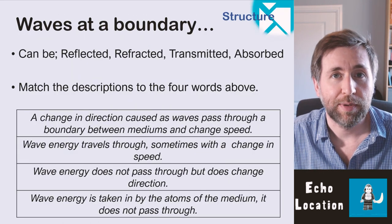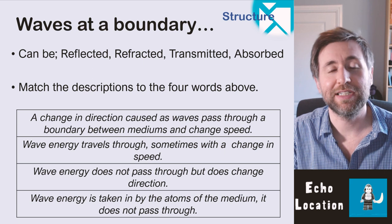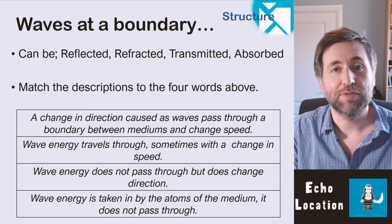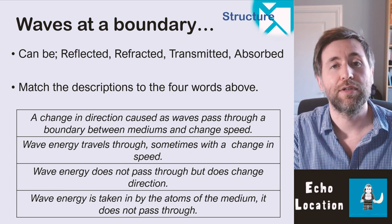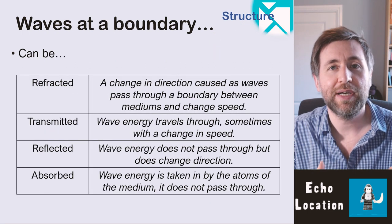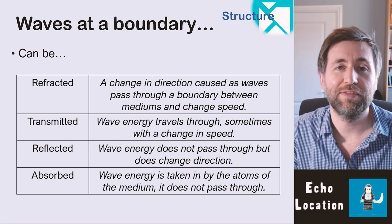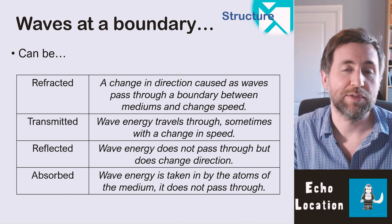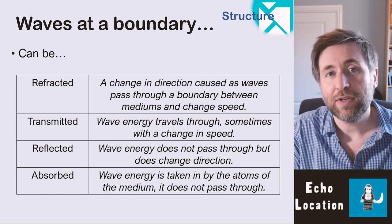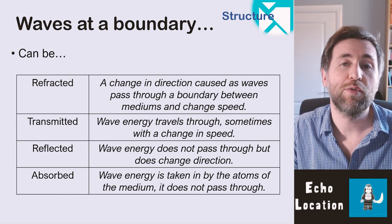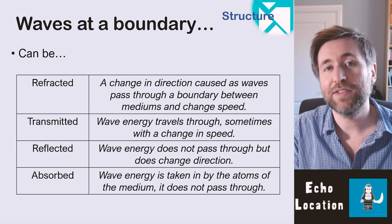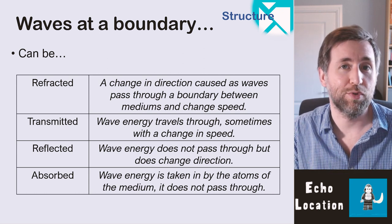Four things can happen at a boundary: waves can be reflected, refracted, transmitted, or absorbed. Refraction is a change in direction caused as waves pass through a boundary between mediums as they change speed. Transmission is waves traveling through a boundary. Reflection is when a wave does not pass through but does change direction. Absorption is when the energy of the wave is taken in by the atoms of the medium.